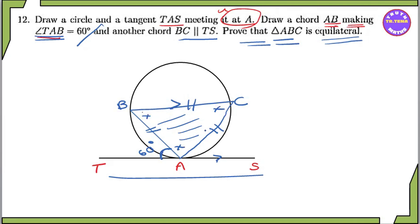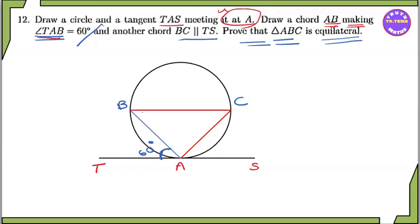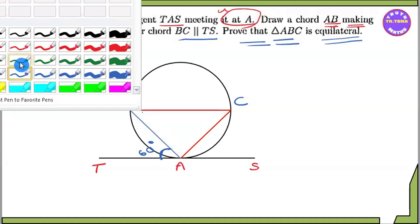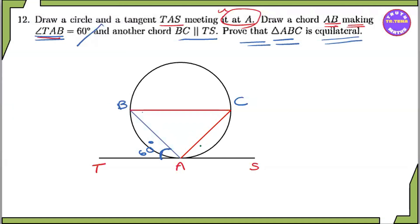This is how to use the same language. So this is how to use the same language. You can use the same language as well. It's not the same language as well. Down A, down B, down C, down C.